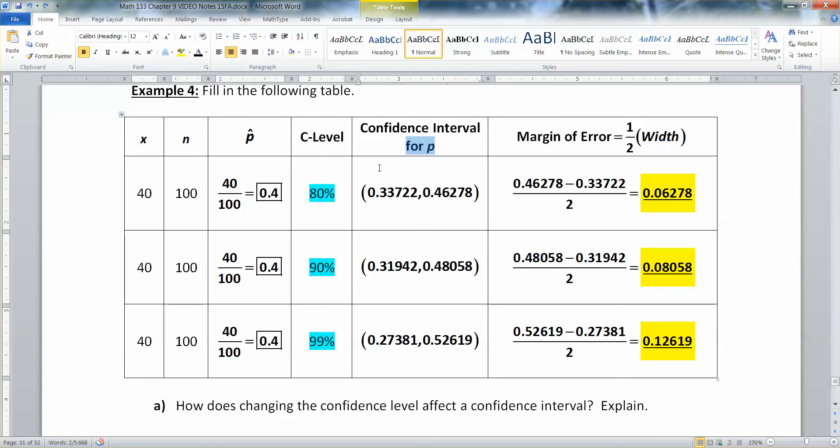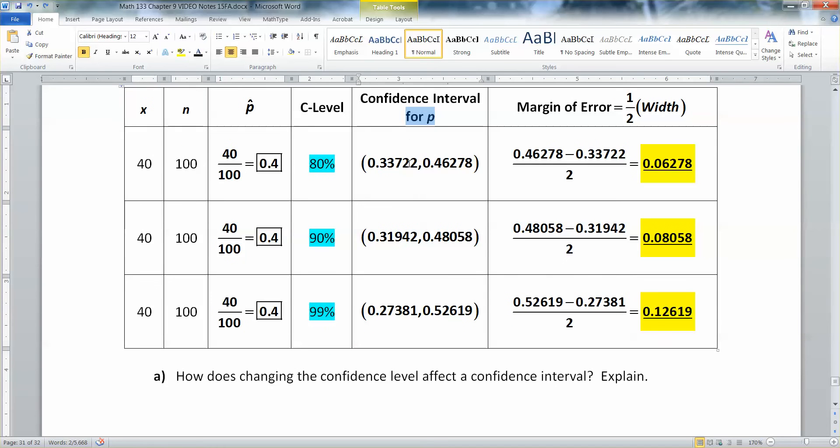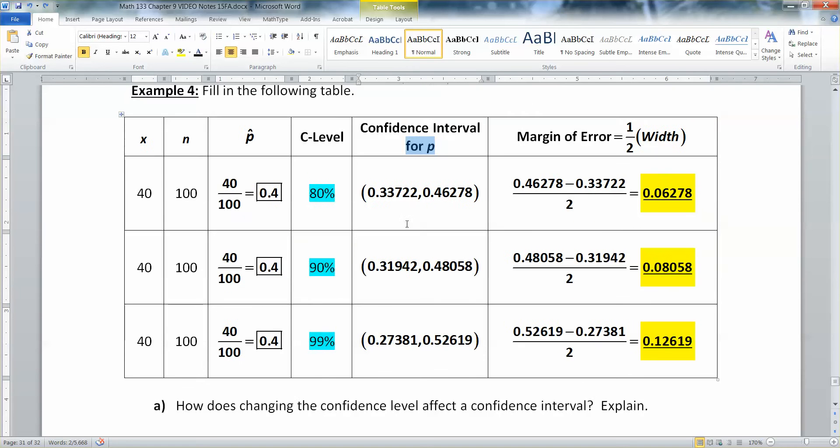So now that gives us margin of errors of 6.3% roughly, 8% and 12.6%. So what's happening? Well, as we increased our confidence level, our margin of error got larger as well. And this makes sense because if you want to be more certain you caught the actual p-value, you make a larger interval, and you will have more confidence that you caught it.